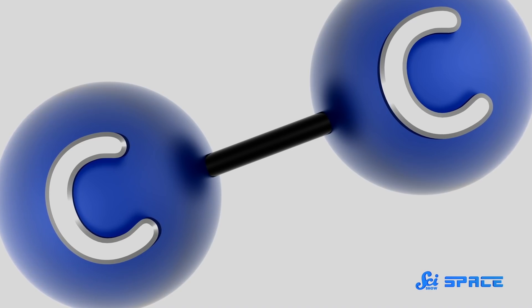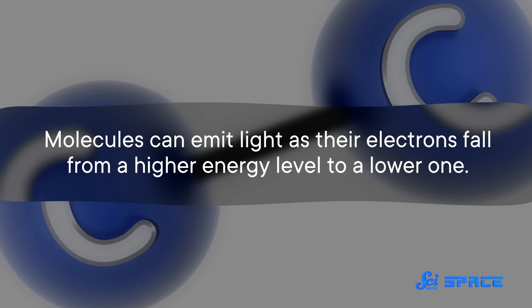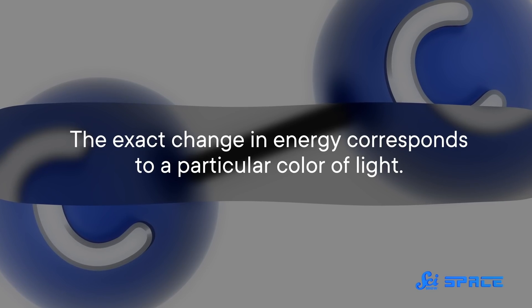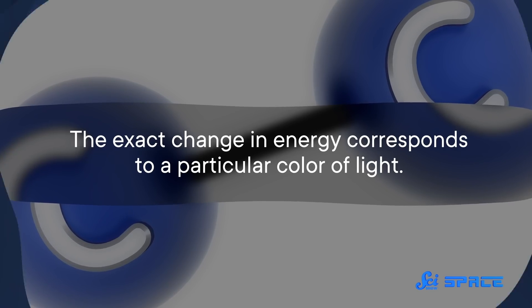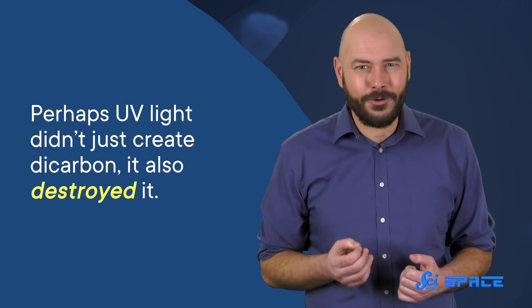Dicarbon shines green because of the arrangement of its electron energy levels. Molecules can emit light as their electrons fall from a higher energy level to a lower one. The exact change in energy corresponds to a particular color of light, in this case, green. But a potential answer on how this color doesn't reach the tail wasn't suggested until the 1930s. Perhaps UV light didn't just create dicarbon, it also destroyed it. And if that destruction happened fast enough, the molecule wouldn't survive long enough to enter the tail. But the technology to actually test that hypothesis didn't exist at the time.